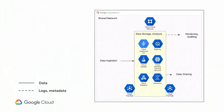Once we've ingested and normalized the data, we probably want to move it to a canonical data store — what some people would call a data lake or data aggregation layer. It does storage, it does analysis, it might be where you serve ML applications, and it writes logs to the audit project.